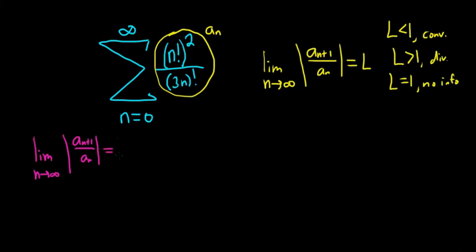That's equal to the limit as n approaches infinity. Now we're going to replace all of the n's with n plus 1's. First let's write down a sub n plus 1. So it'll be n plus 1 factorial, and this whole thing is squared,